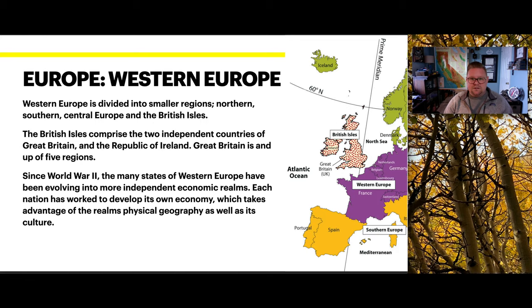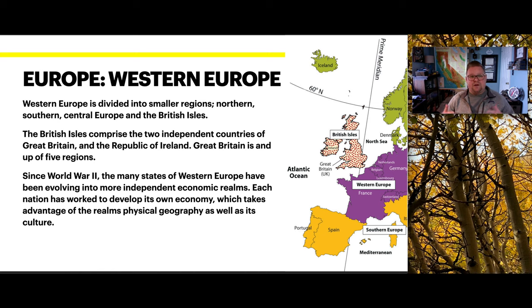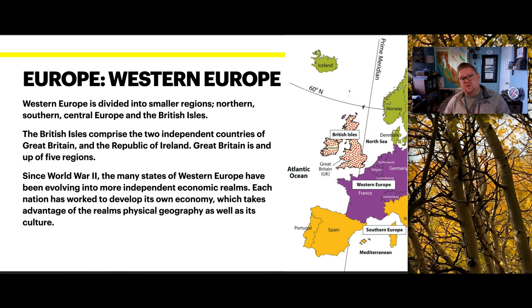Western Europe is divided into smaller regions: Northern, Southern, Central Europe, and the British Isles. The British Isles is made up of two independent countries — Great Britain and the Republic of Ireland. Great Britain can also be divided into five smaller regions. Since World War II, many states in Western Europe have been evolving into more independent economies, each developing its own economy based on physical geography, resources, and culture.